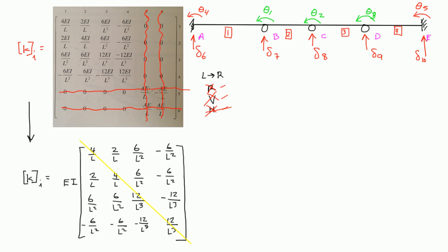Welcome back. In the last video we looked at the stiffness matrix, we simplified it a little bit, and we drew a diagram that showed us what the degrees of freedom are for this structure. Now in this video we're actually going to look at each one of the four elements, and we're going to come up with a stiffness matrix using the template we came up with in the last video. Those stiffness matrices we're going to need later on to find all the reactions on this indeterminate structure.